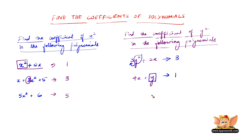Let us take another example: 6y² plus 2y plus 5. The coefficient of y² is 6.